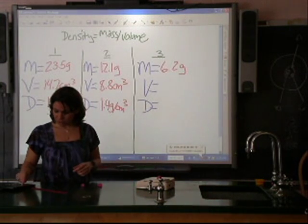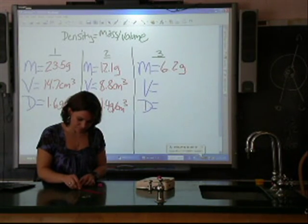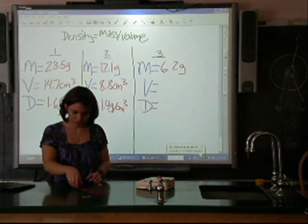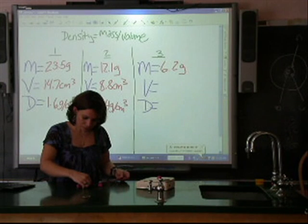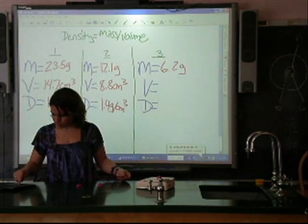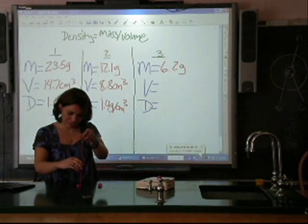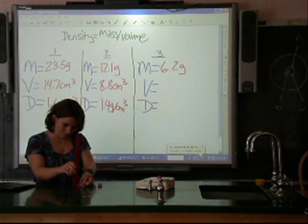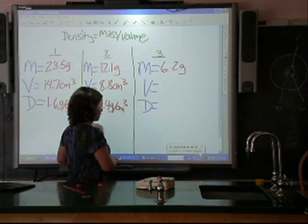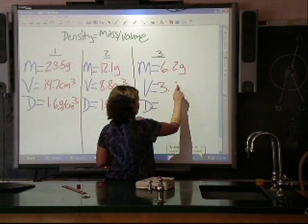To find the volume again, I'm just going to take length times width times height. In this case, my length is around 1.5. My width is going to be right around 1.8. My height is going to be about 1.3. So my volume is 3.5 centimeters cubed.